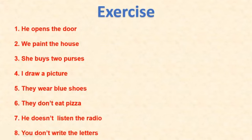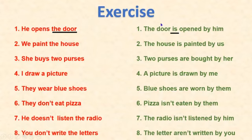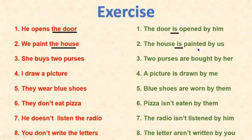Let's check the correct answers. Number one: 'He opens the door' → 'The door is opened by him.' 'Is' because it's singular; 'opened' is the past participle of 'open'; and 'him' because the subject is 'he.' Number two: 'We paint the house' → 'The house is painted by us.' 'Painted' is the past participle, and 'us' is the object pronoun for 'we.'